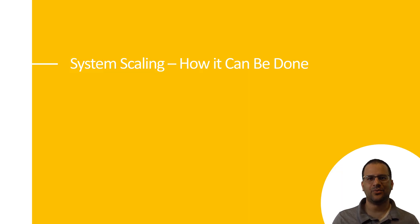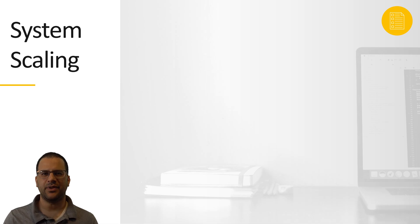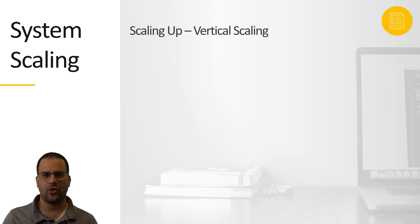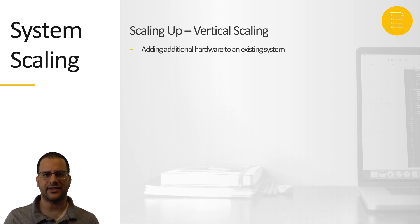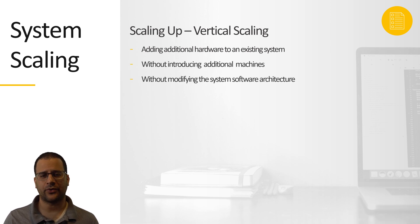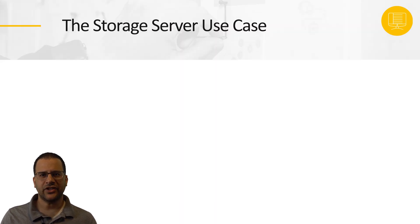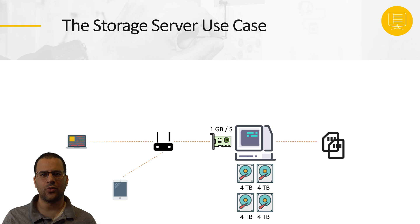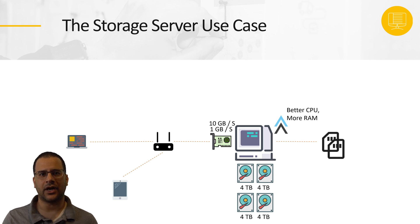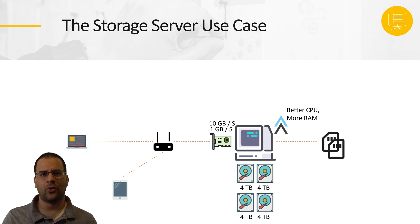To modify the scale of our system, there are some manners in which this can be performed. The first manner of increasing a system's scale is referred to as scaling up, or vertical scaling. When scaling up, we rely on adding additional physical hardware to the existing system without introducing new machines or a new system software architecture. For example, to scale up my storage server, I could increase storage capacity by adding more disk drives, place a faster CPU in it, add more RAM, and eventually add a 10 gigabit network card. By doing so, my server remained the same server with regards to its operating system, features, and interface, but is now able to store more information and handle more concurrent users at a higher network speed.